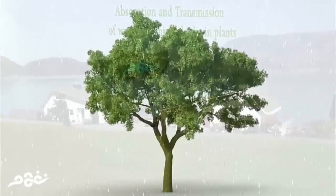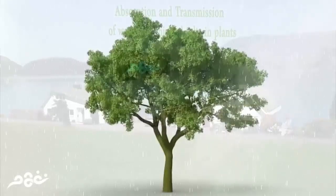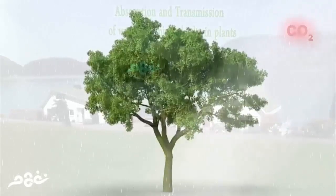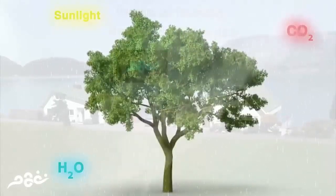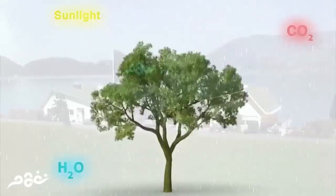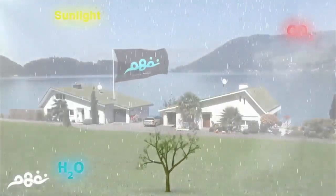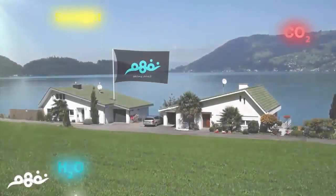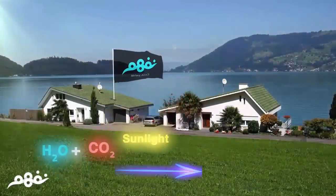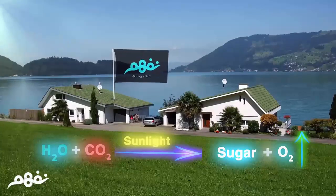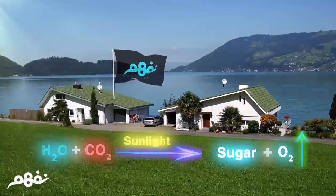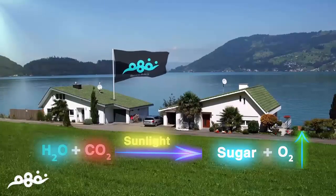We all know that there are very important factors needed for the plant to grow normally: carbon dioxide (CO2), sunlight, and water (H2O). The plant uses these components to perform the famous process of photosynthesis, through which it converts raw or simple materials in the environment into more complex forms like starch and other carbohydrates.